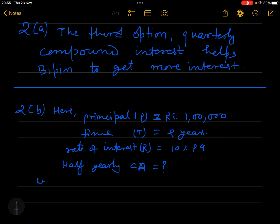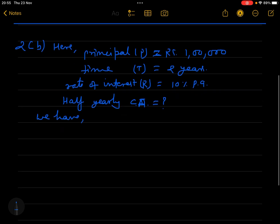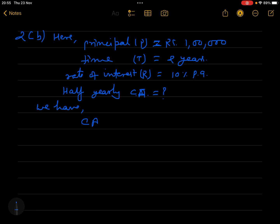Let us apply the formula: CA is equal to P times (1 plus R by 200) to the power 2T. Not minus 1, because we need the amount, not just the interest.